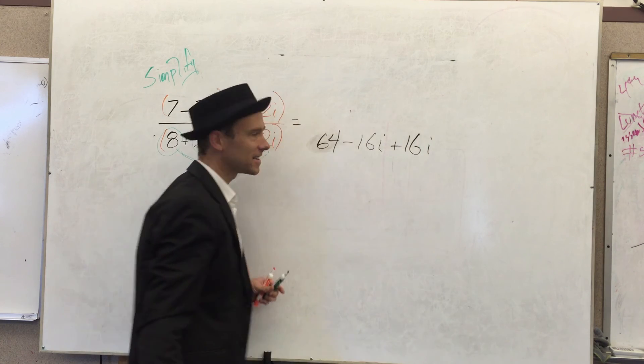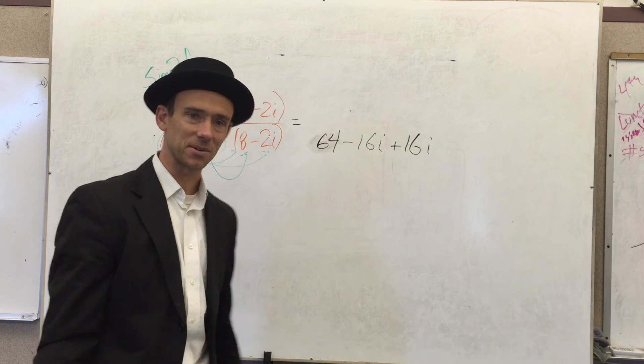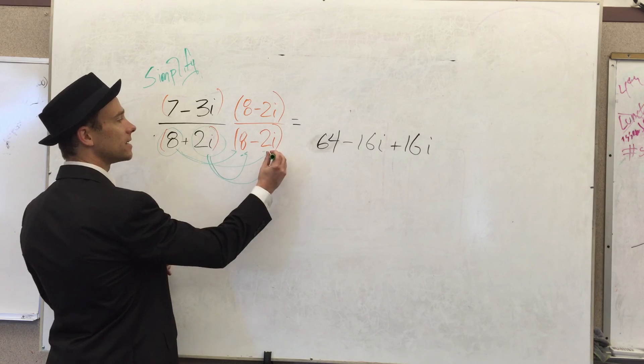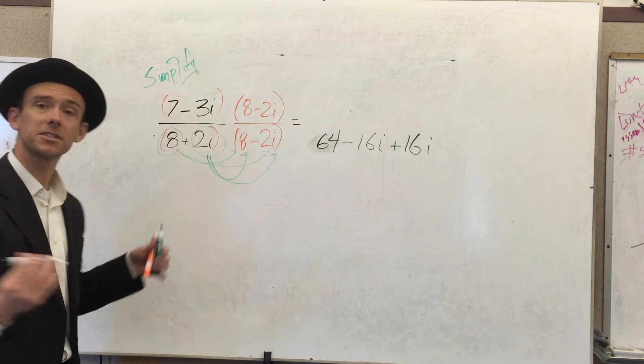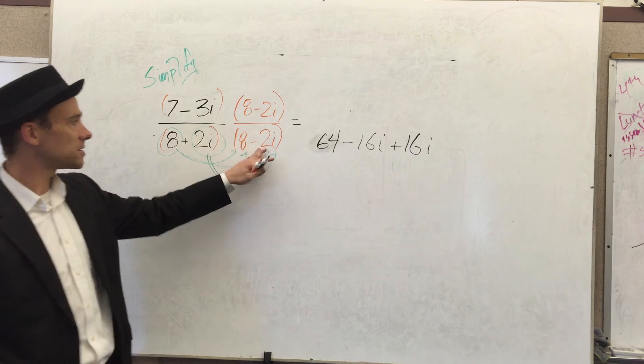So let's go this way. 2i times 8 is going to be plus 16i. So see you later i, you just got yourself canceled. Last one, we're going to go 2i times 2i, and here's the magic of the imaginary unit.